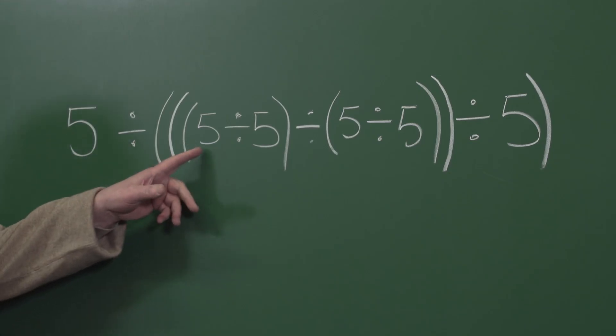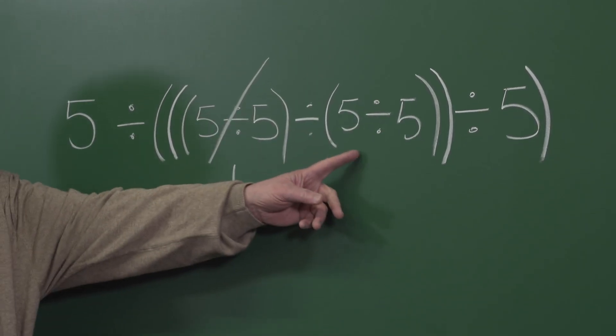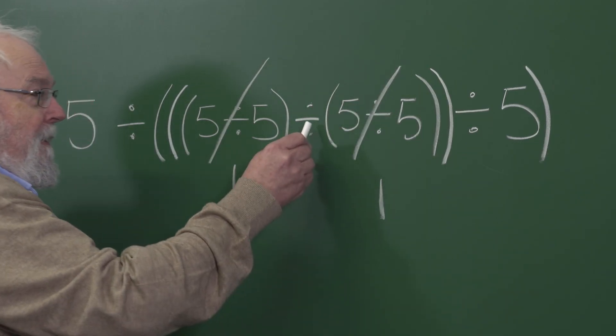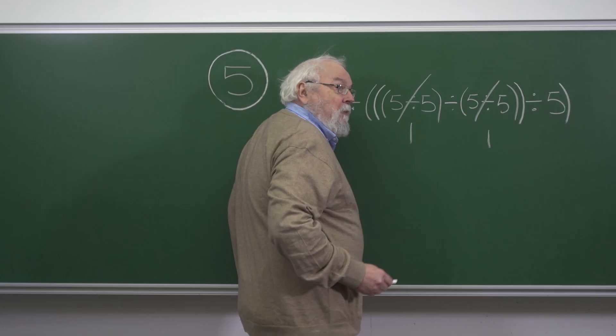So five divided by five is one. Five divided by five is still one, nothing has changed. In the middle here we have one divided by one which is one.